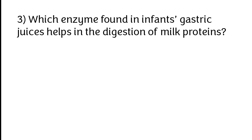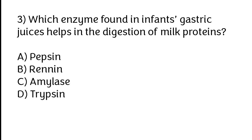Which enzyme found in infant's gastric juice helps in the digestion of milk proteins? Options: A) Pepsin, B) Rennin, C) Amylase, D) Trypsin. The correct answer is option B, rennin.